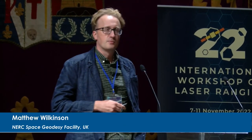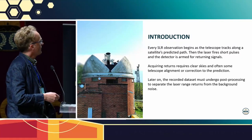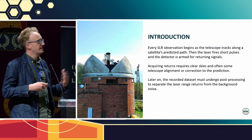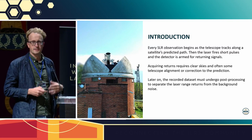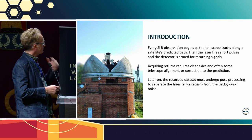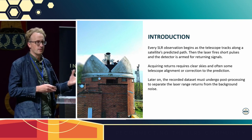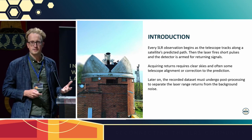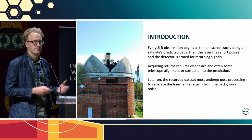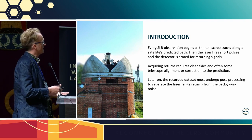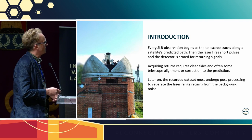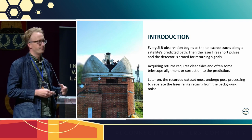My name is Matthew Wilkinson. We're going to talk about how to automatically and consistently detect and extract SLR measurements for every satellite pass. Every observation begins with the telescope tracking along a predicted path. The laser fires short pulses and the detector is armed for return signals. To acquire track, you probably need to align the telescope and make corrections to the prediction, either in time bias or radially. Once you've done that, you move on to the next pass. But later on, you have to revisit that data and do some post-processing to separate the laser range measurements from the background noise.